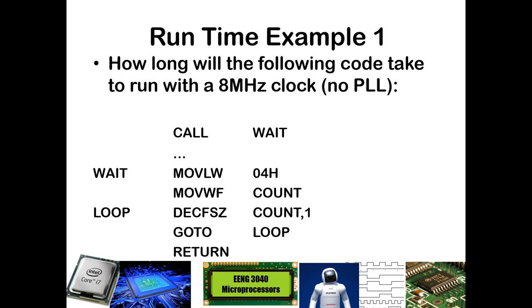If we think about how many times this will decrement: it goes from four to three, three to two, and two to one without skipping — that's three times at one cycle — and then the last time it goes from one to zero and skips, so one time at two cycles. The goto executes every time it does not skip, which is three times at two cycles each. Finally, it hits the return exactly once, which is a two-cycle command. Adding it all up: 2 + 1 + 1 + 5 + 6 + 2 = 17 cycles. Without the PLL using our 8 MHz clock, each cycle takes 500 nanoseconds, so this entire execution takes 8.5 microseconds.